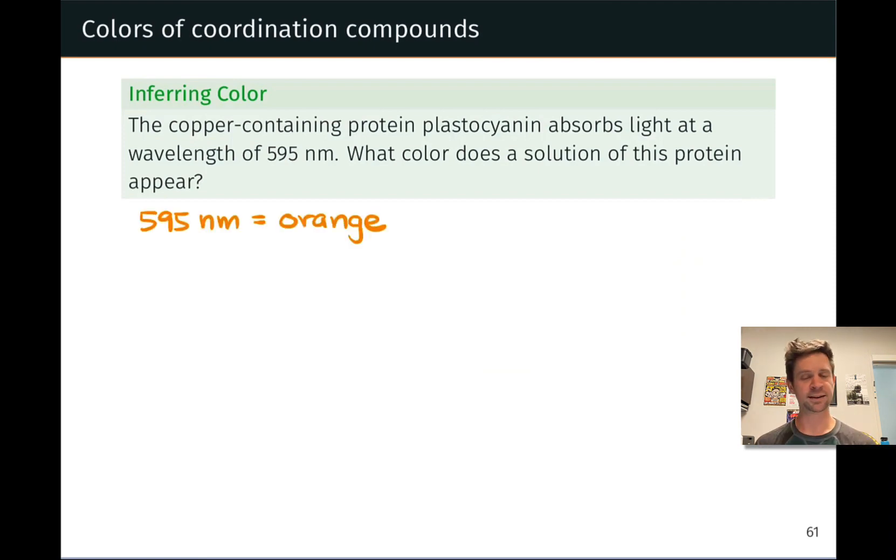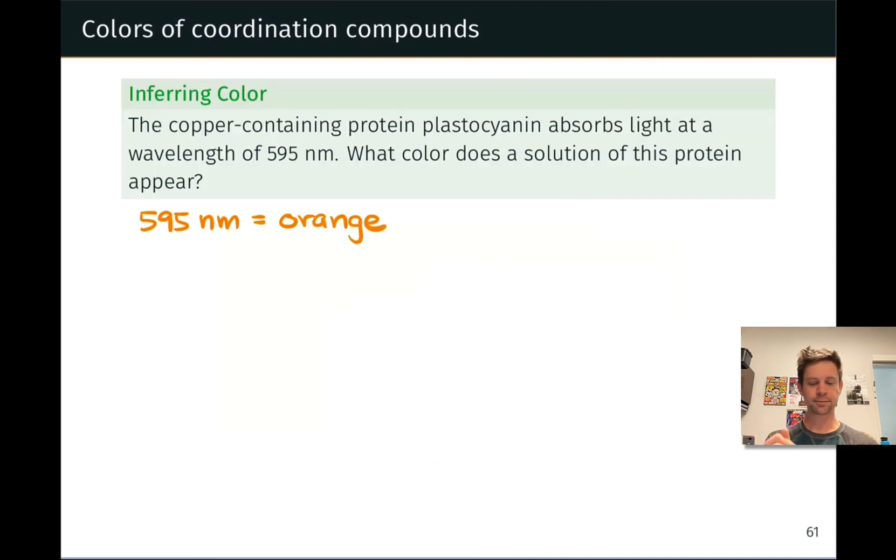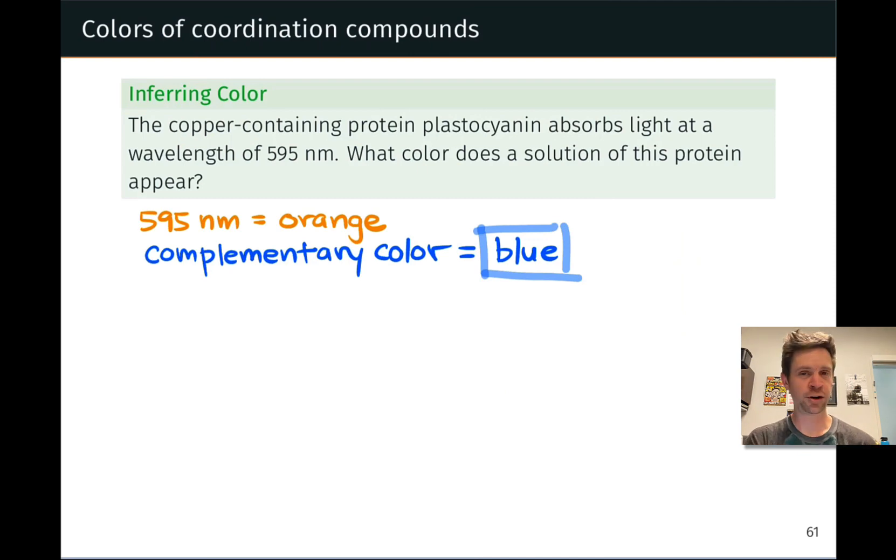Well, we've already seen that 595 nanometers is in the orange region of the spectrum. If we back up to the color wheel, the color we would actually observe corresponds to the most strongly transmitted color, which is going to be the complementary color, which is blue. And so this solution of this protein would appear blue due to the absorption of orange by the copper containing complex inside the plastocyanin protein.